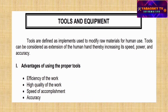A tool is defined as an implement used to modify raw materials for human use. Tools can be considered as an extension of the human hand, thereby increasing its speed, power, and accuracy. Here are the basic advantages of using the proper tool.